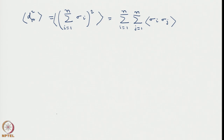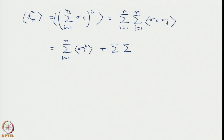You can take the expectation inside. If you expand the double sum, there will be n terms where sigma_i equals sigma_j, that is i equal to j. One can write the first terms where i=j as sigma_i squared summed from i=1, corresponding to the i=j term, and the remaining terms as a double sum subject to the constraint that i is not equal to j, for all i, j from 1 to n. This remaining term is the expectation of sigma_i times sigma_j.